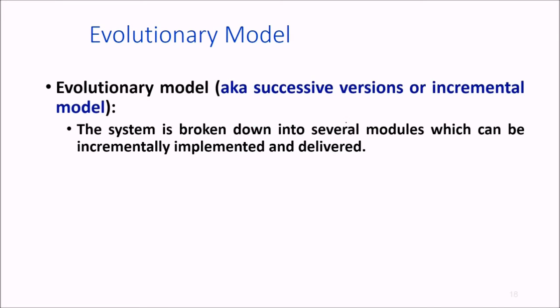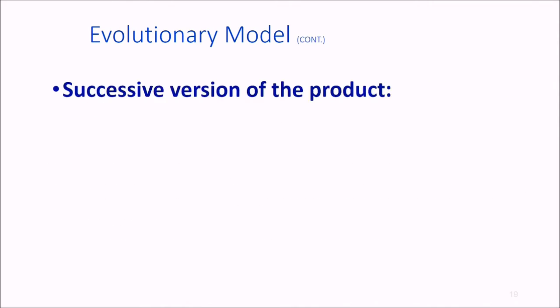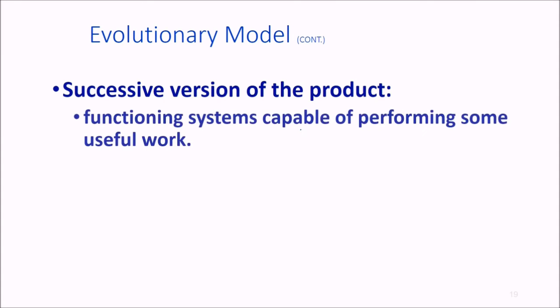Then we have the evolutionary model, also known as successive version or incremental model. The system is broken down into several modules which can be incrementally implemented and delivered. We develop the core modules—the basic, important modules of the system. The initial skeleton is then refined with increasing levels of capability by adding various new functionalities in successive versions of the product.